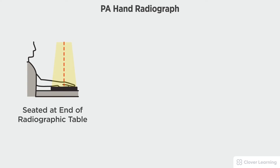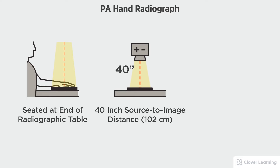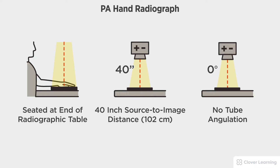In this view we will be demonstrating the PA hand. The PA hand should be performed with the patient seated at the end of the radiographic table with the image receptor placed tabletop with a 40 inch source to image distance and no tube angulation.